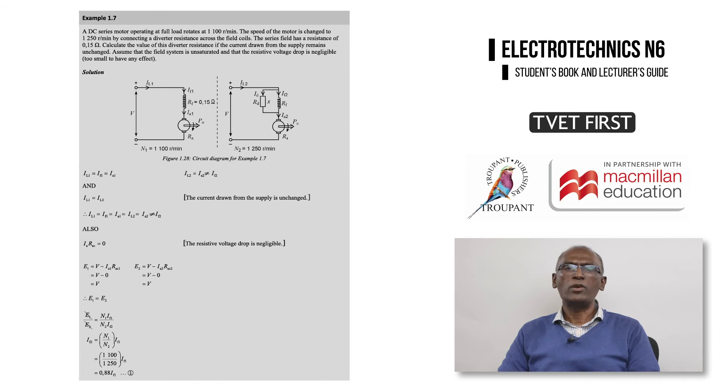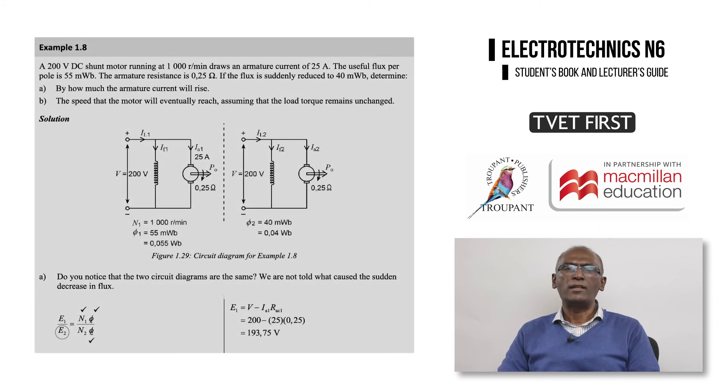The speed control section also includes problems involving the following conditions: where current drawn from the mains remain unchanged, where ohmic voltage drops are negligible, and situations where the flux suddenly changes.